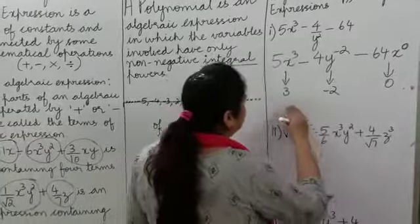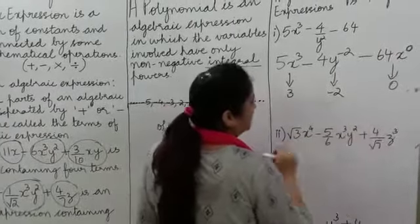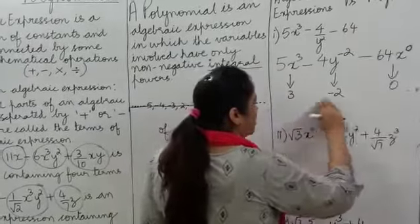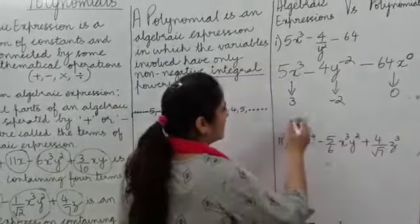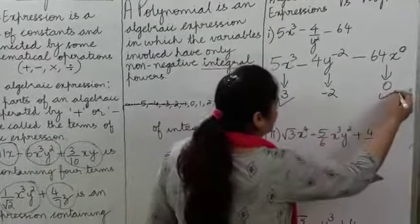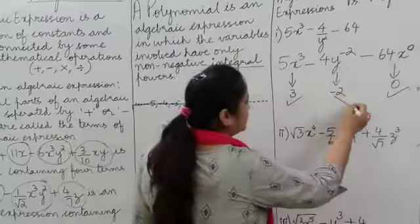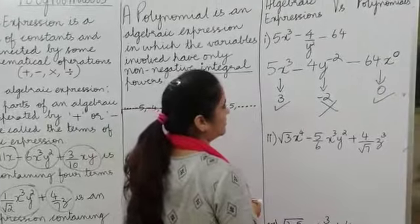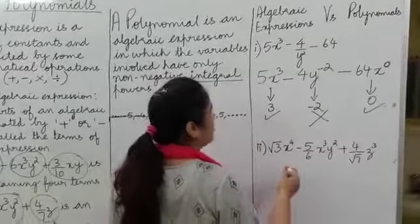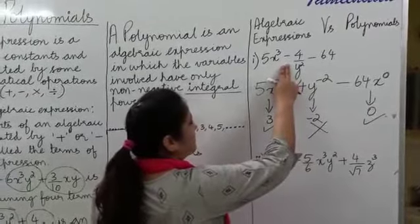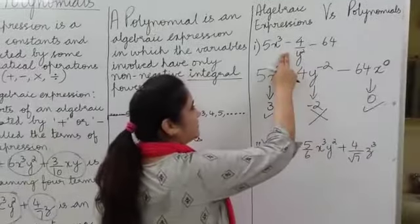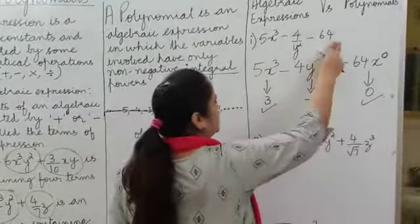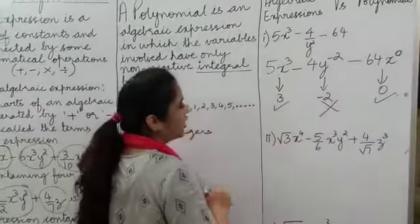Now, are all the powers of the variables in this expression whole numbers? 3 is a whole number, 0 is a whole number, but −2 is not a whole number. So this algebraic expression is an algebraic expression only, not a polynomial.